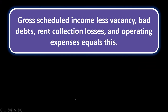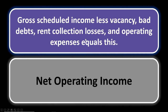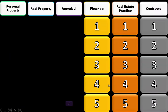Appraisal number five: gross scheduled income, less vacancy, bad debts, rent collection losses, and operating expenses equals what? We take gross scheduled income, account for income not actually received, and subtract expenses — the outflow of money — and we get net operating income, or NOI.